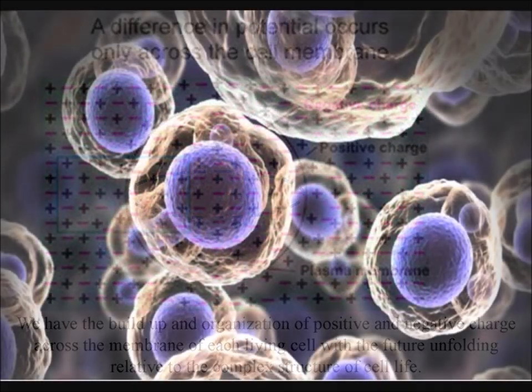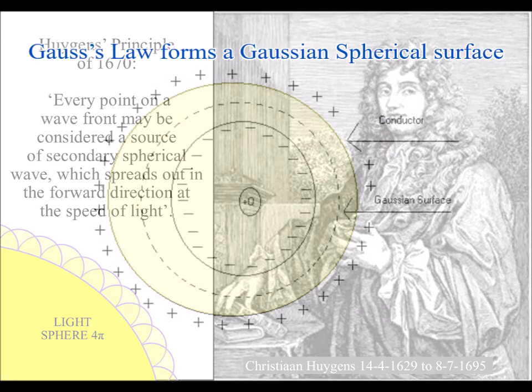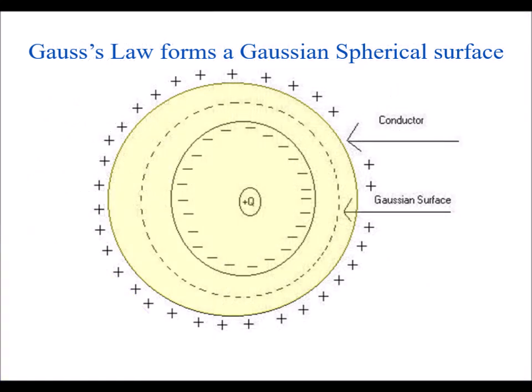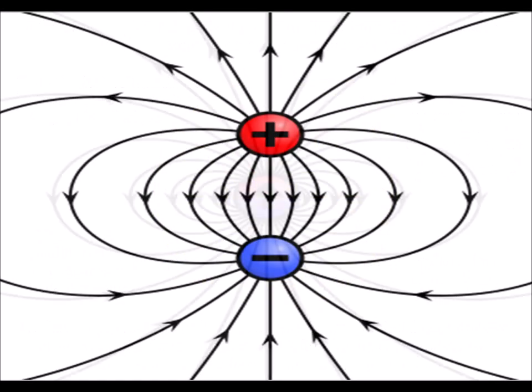All we would need is spherical geometry to arise naturally in the universe, and it could form a template for cell life. The interior of the sphere would naturally form the characteristics of three-dimensional space, with the two-dimensional surface forming a boundary condition for positive and negative charge.